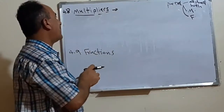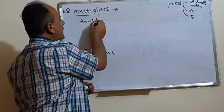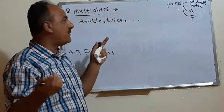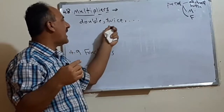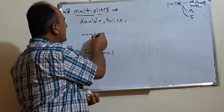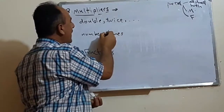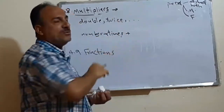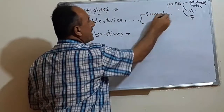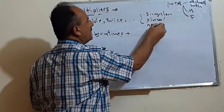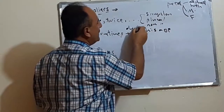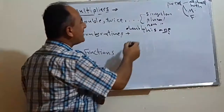There are two types of multipliers. The first type includes expressions like 'double' or 'twice.' For example, double means two times, and twice has the same meaning. Then we have 'times,' which means a number plus 'time' or 'times.' After multipliers, we can have a singular noun, a plural noun, or a non-count noun.